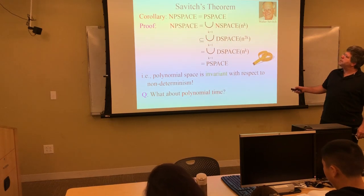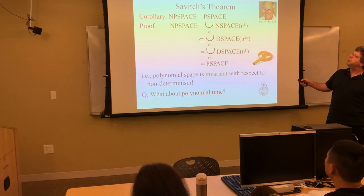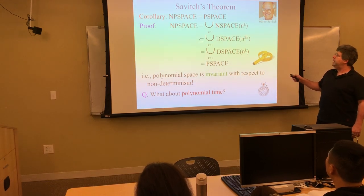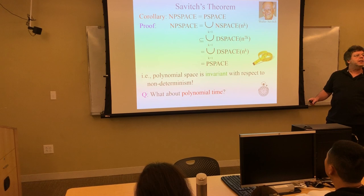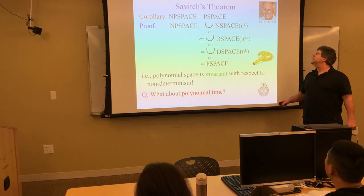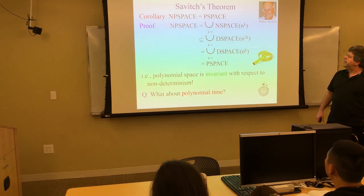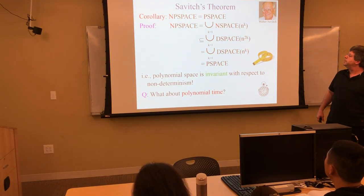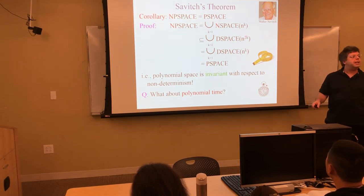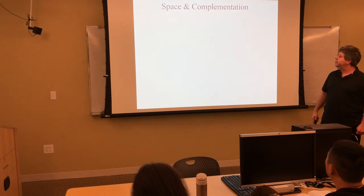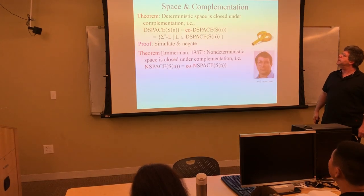Certain corollaries follow immediately. Non-deterministic polynomial space is the same as deterministic polynomial space, because every non-deterministic space class is contained in the deterministic square space. So together, all polynomial spaces are the same whether deterministic or non-deterministic. This is kind of the P equals NP question with respect to space — and that's just a corollary of Savitch's Theorem. For time, we still don't know. It's open.